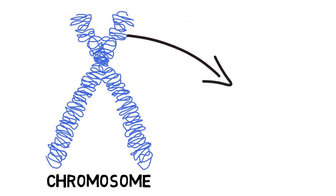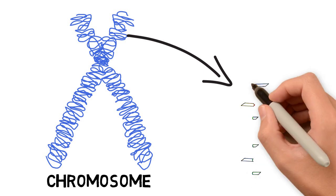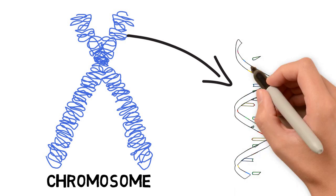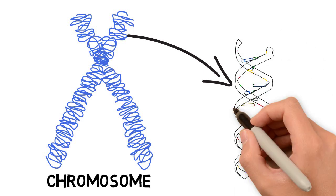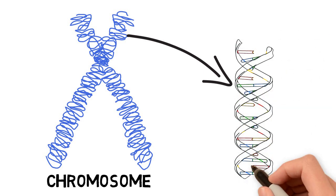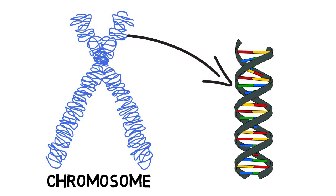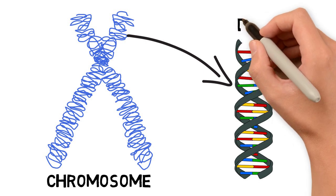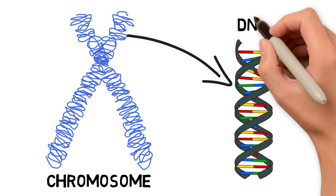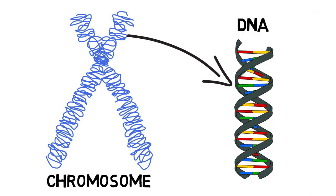DNA is a double-stranded molecule formed by two chains of nucleotides connected together. In its natural state, it adopts a double helix structure.